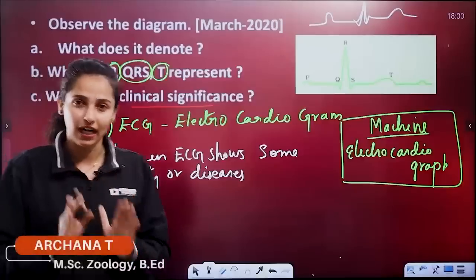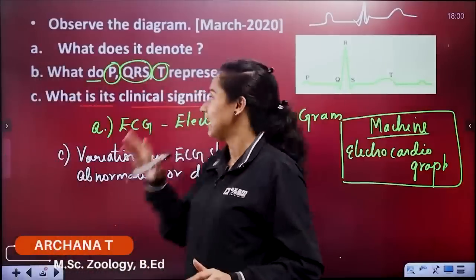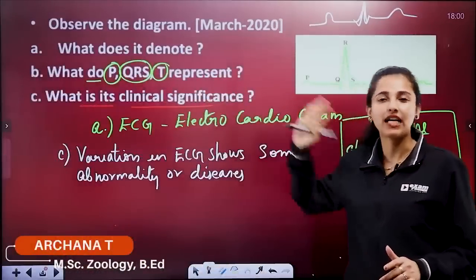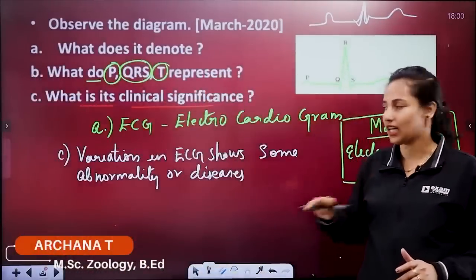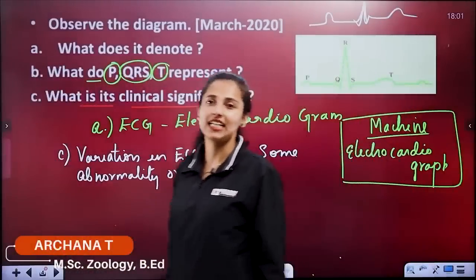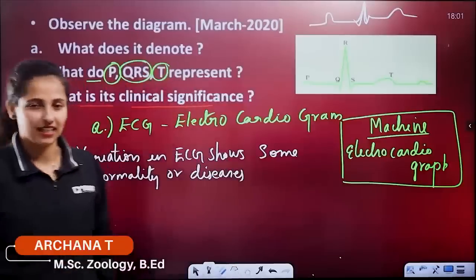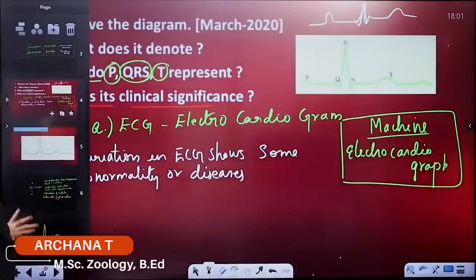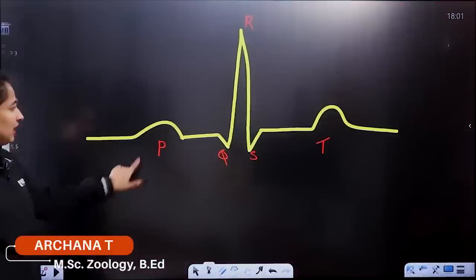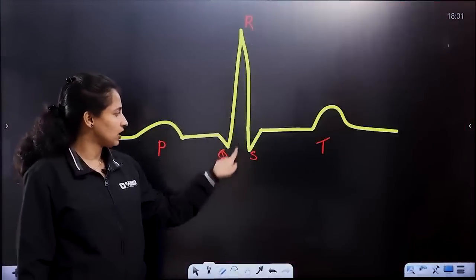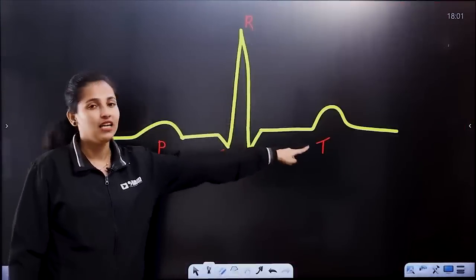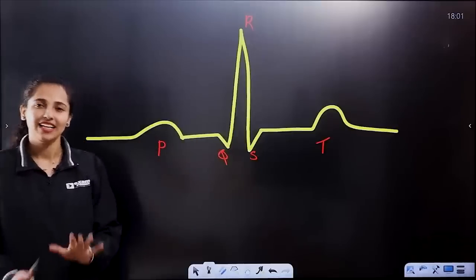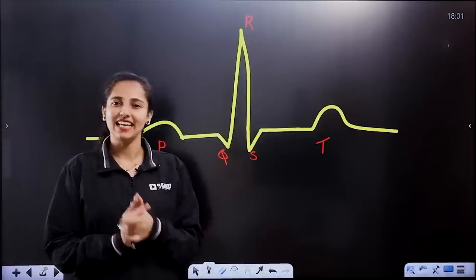How do you interpret this? It is based on the PQRS complex. When it comes to the clinical significance, the PQRS complex shows a depression, then QRS, then T and P. That's how we use the ECG for diagnosis. Thank you.